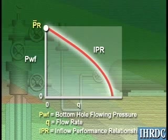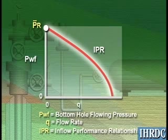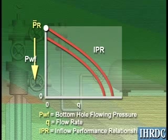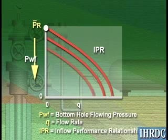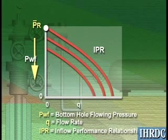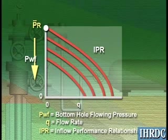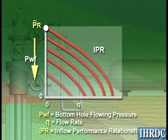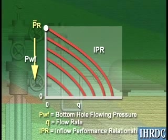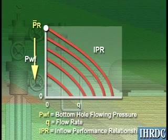This is a typical curve for a given average reservoir pressure. The reservoir pressure will generally be depleted by production, so the IPR over the life of a well may be shown by a family of curves shrinking toward the origin. Each curve represents the pressure-rate relationship at a given average reservoir pressure.